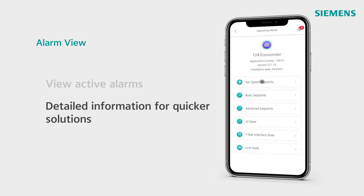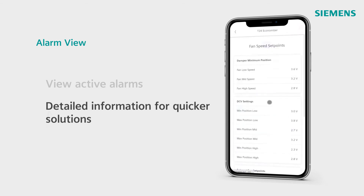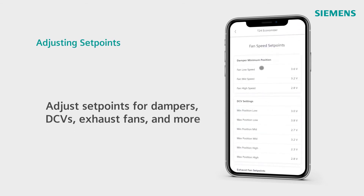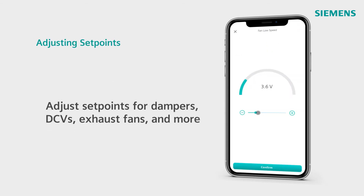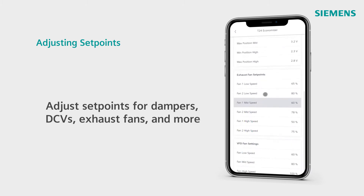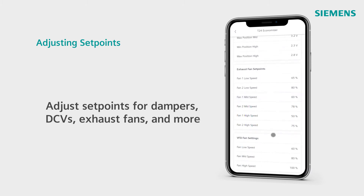You can also actively adjust set points for different parts of the unit. For example, adjust fan speed set points for damper minimum position, demand control ventilation, exhaust fan set points, and VFD fans.